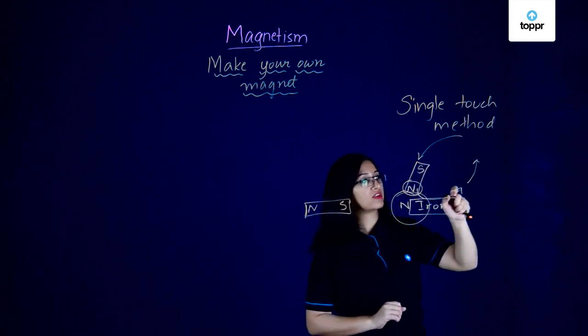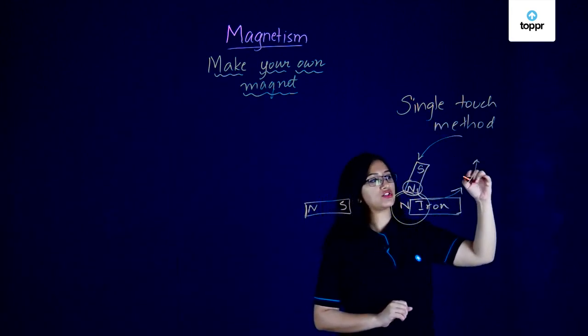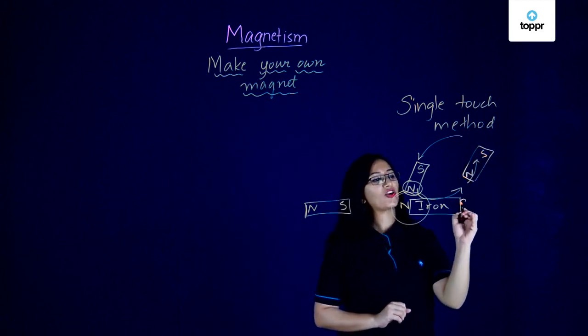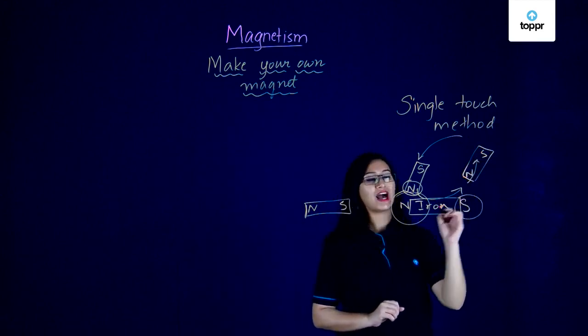And the point which is moving away from the north pole as you're taking away the magnet will slowly start to develop a south pole.